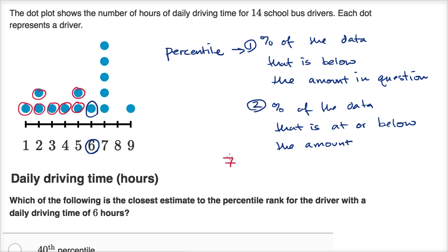So we could just say seven, if we use this first technique, we would have seven of the 14 are below six hours per day. And so that would get us a number of 50%, that six hours is at the 50th percentile.